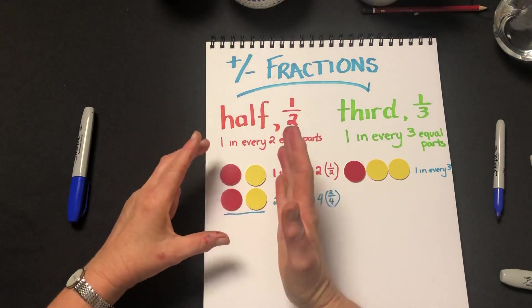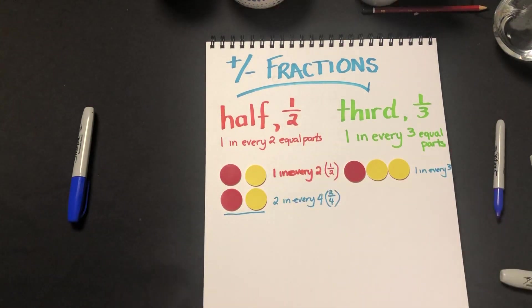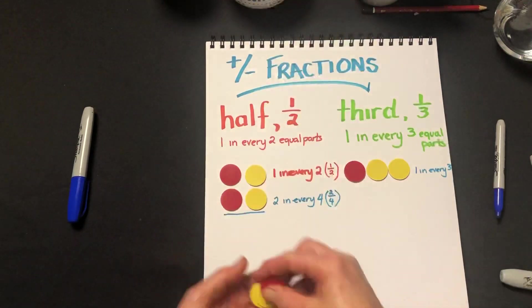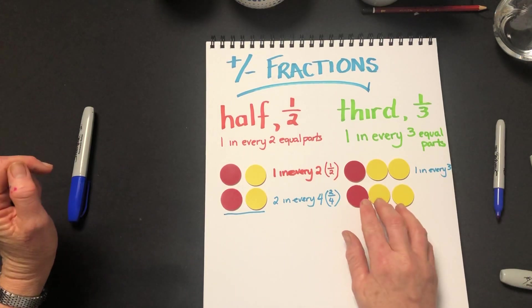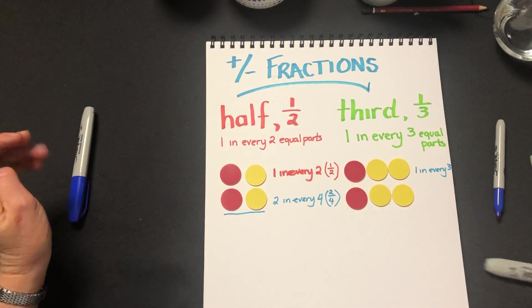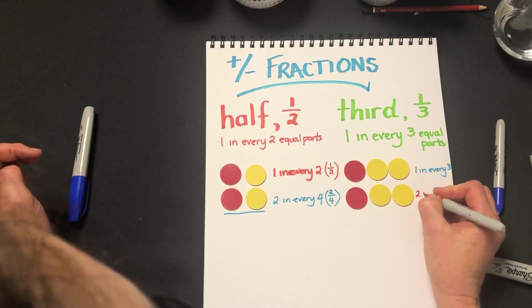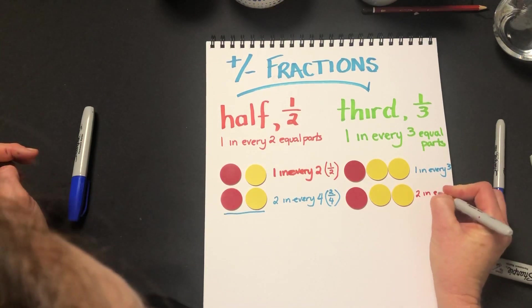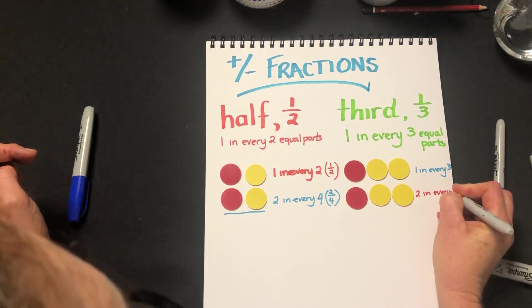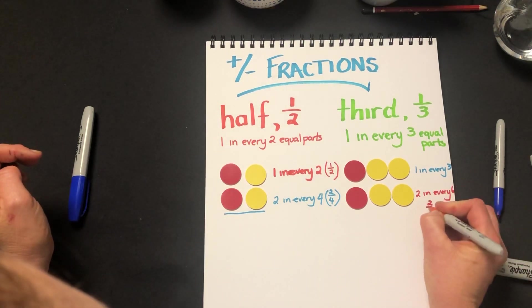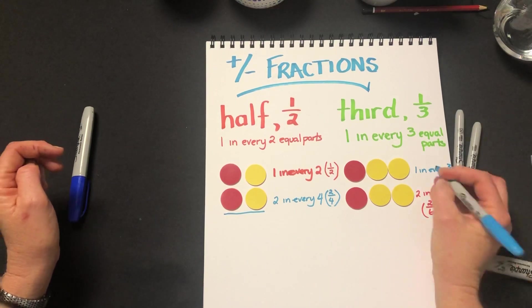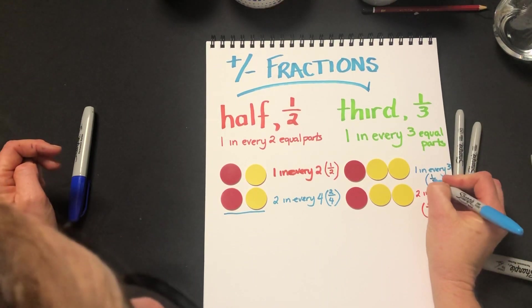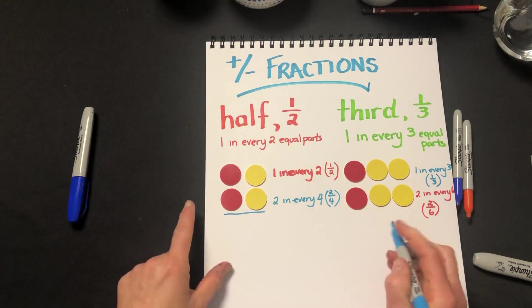Again the wholes are different. Here the whole has four counters, here the whole has three counters. So we're going to need to once again see if we can change these wholes. This time we've got two in every six. Two sixths we know is equivalent to one third. But again the wholes are different.